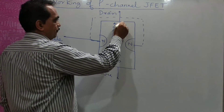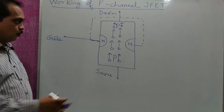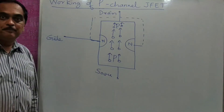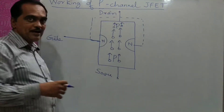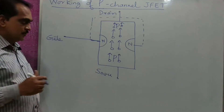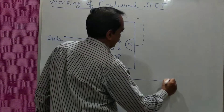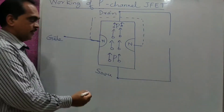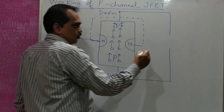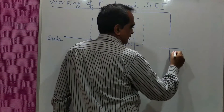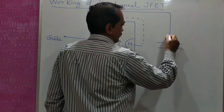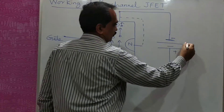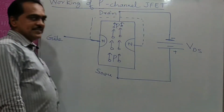If I want holes to flow from source to drain, at the source I should have some repelling force, and at the drain I should have some attracting force. That can be done by a voltage source. You apply a positive supply at the source to repel the p-type, and a negative supply at the drain to attract them. This voltage between drain and source is called VDS.